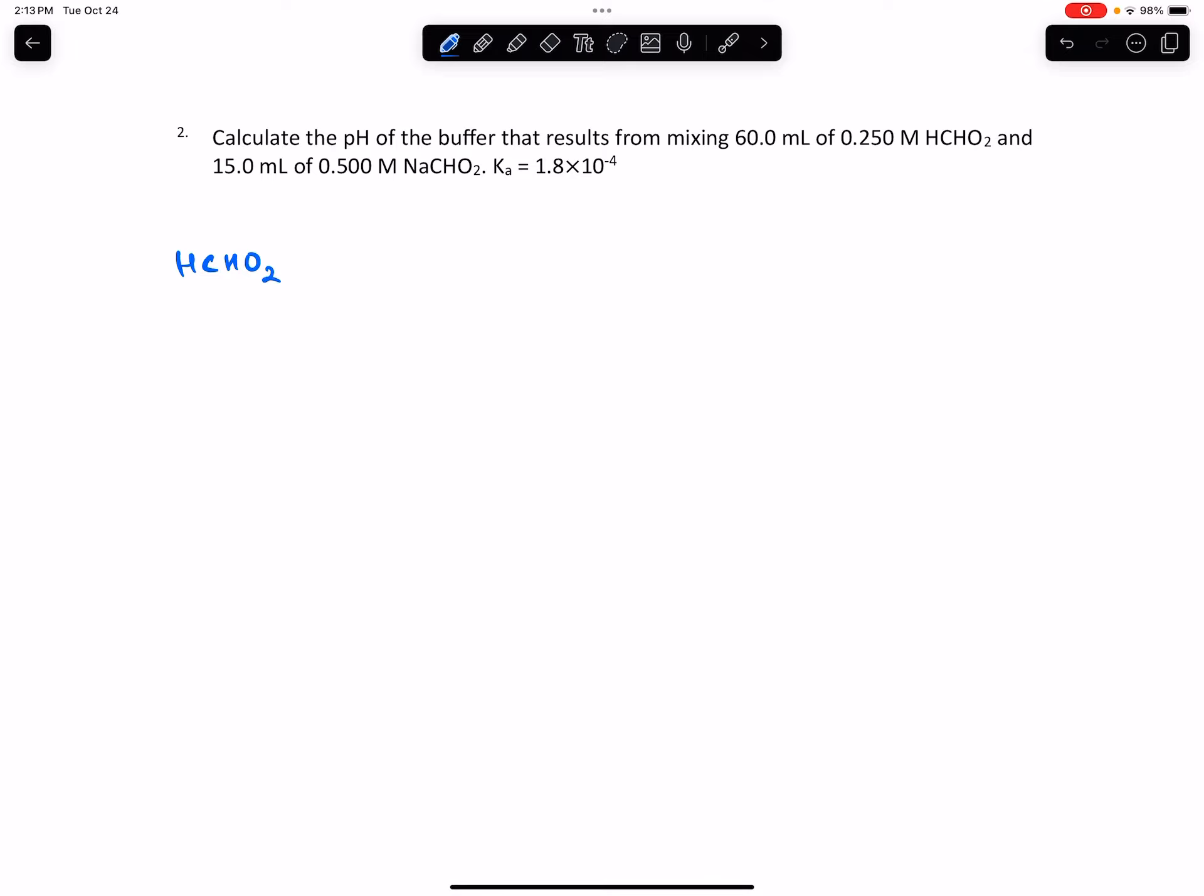The concentration of the acid is 0.250 molar - let's call that M1. The volume is 60.0 mL, which we'll call V1. M2 is the new concentration we're trying to find, and V2 is 60 plus 15, which is 75.0 mL.